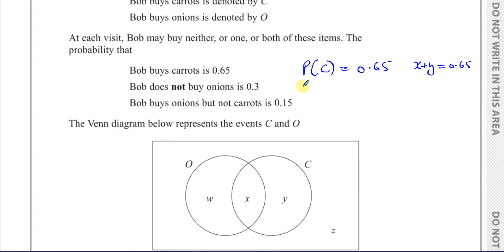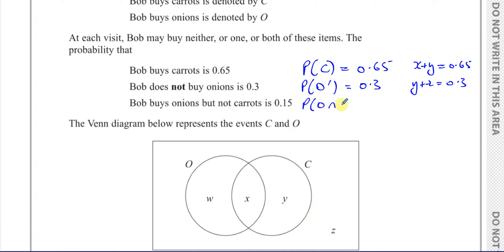The probability that Bob does not buy onions — O prime — is 0.3. So not buying onions would be these two regions together: Y plus Z. So Y plus Z equals 0.3 — everything outside of the O circle, which is Y and Z. And the probability that Bob buys onions but not carrots — onions alone — is 0.15. That's going to be just W. So W equals 0.15.